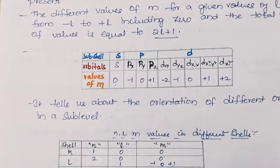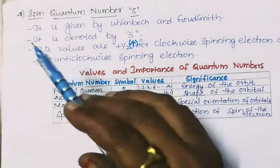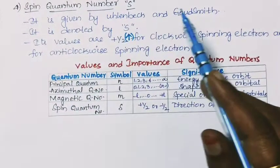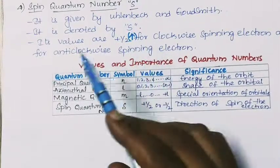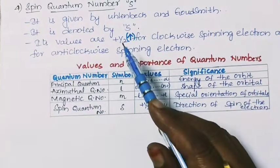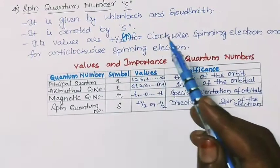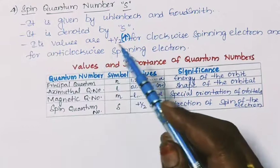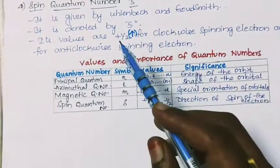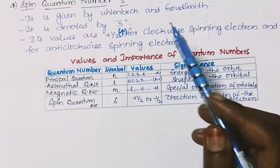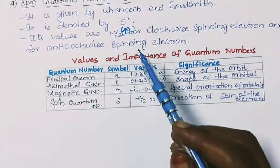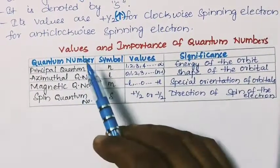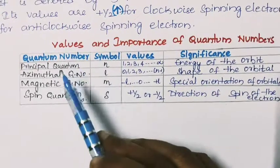The fourth quantum number is the spin quantum number. It is given by Uhlenbeck and Goudsmit and is denoted by small s. Its values are +½ for a clockwise spinning electron and −½ for an anticlockwise spinning electron. It defines the direction of spin of the electron. Here is a summary table showing all four quantum numbers and their significance.